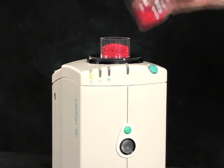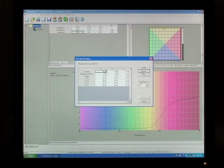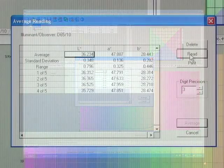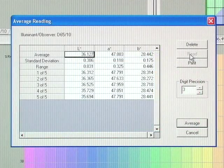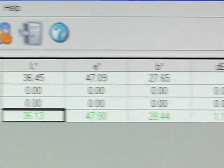The readings are then averaged to get a single measurement representing the batch. If the pellets are colored, the data would be displayed as LAB color values. For clear pellets with no apparent color or white pellets, a yellowness or whiteness value can also be displayed.